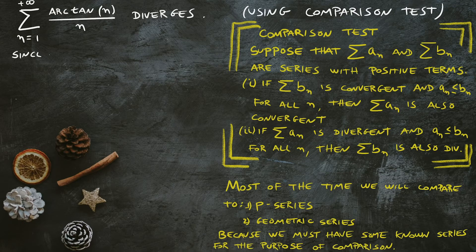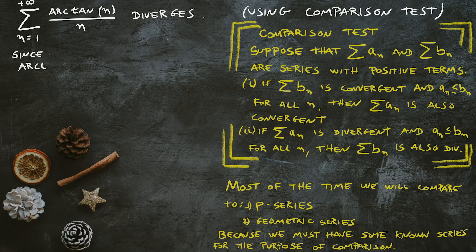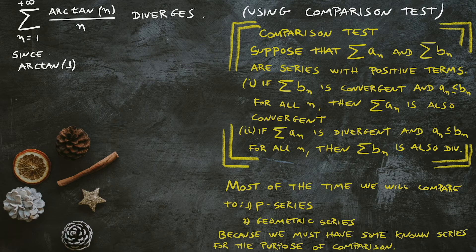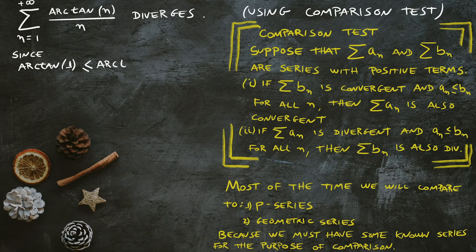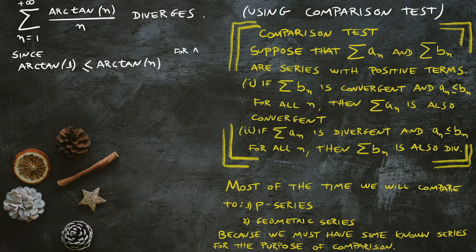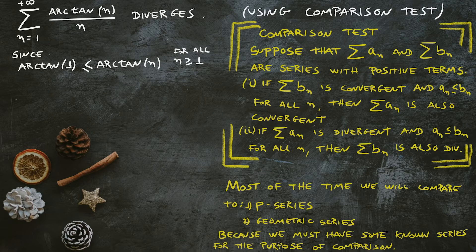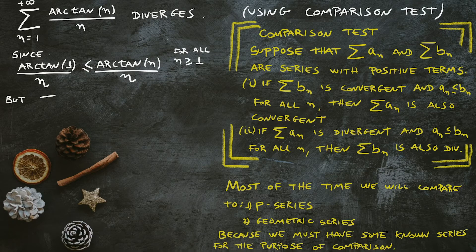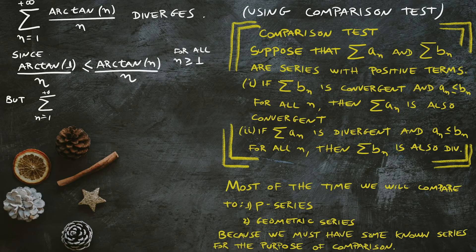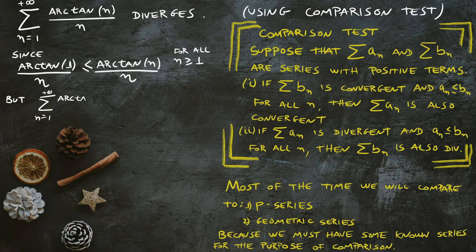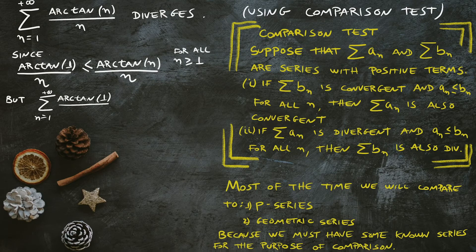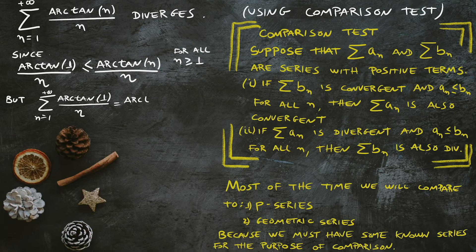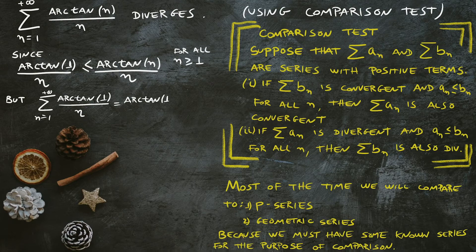Since arctan(1) ≤ arctan(n) for all n ≥ 1—that's true because arctan(n) is increasing—my first term is going to be smallest than any other term in my series. Worst case is when n equals 1.